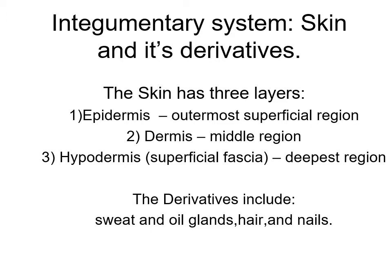Dense regular connective tissue is like the grain of wood — the fibers run along a pattern, kind of like oak. Dense irregular connective tissue has fibers going in all different directions, giving a lot more tensile strength in every direction. Under the skin it's more varied directions but not as dense as you'd see in a ligament with dense irregular, or in a tendon with dense regular connective tissue.